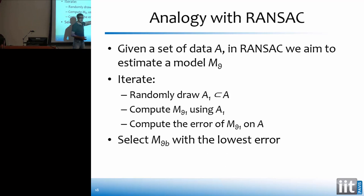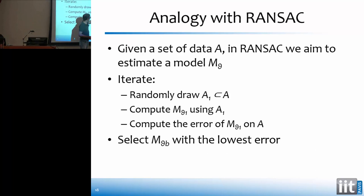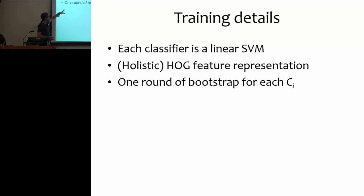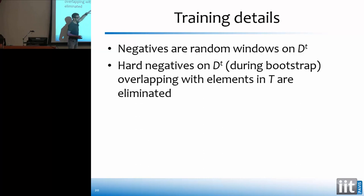Here are some training details. We used the Dalal and Triggs approach with holistic HOG features, linear SVM, and one round of boosting. Windows are selected randomly the first time. During the bootstrap, we check that the hard negatives do not overlap with the initial training set T. That's all for the training phase.